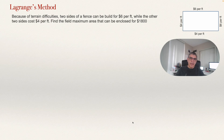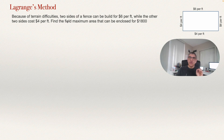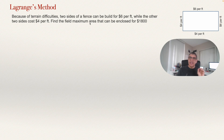In this video I will be explaining how to use the Lagrange method for solving an optimization problem. The problem we have here: because of terrain difficulties, two sides of a fence can be built for six dollars per foot while the other two sides cost four dollars per foot. Find the maximum area that can be enclosed for eighteen hundred dollars.